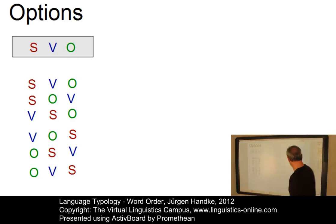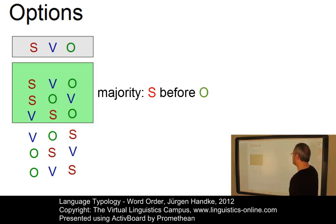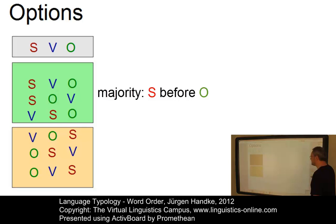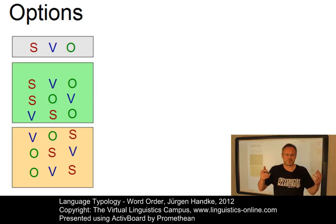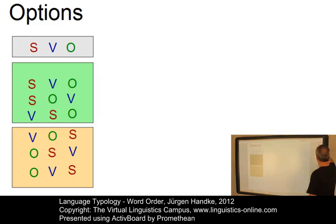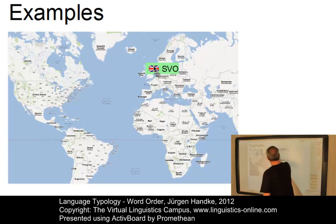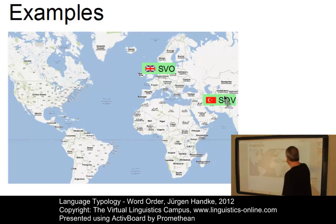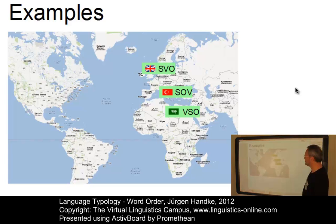It is quite interesting that the majority of the languages of the world use patterns where the subject, in each case, precedes the object. Patterns where the subject follows the object are marginal. So it is the first three ordering types that constitute the main parameters. SVO is illustrated by English, SOV by Turkish, and the Arabic languages — illustrated by the Saudi Arabian flag — are languages where the verb comes first. So these are our three main types. All other types are marginal.